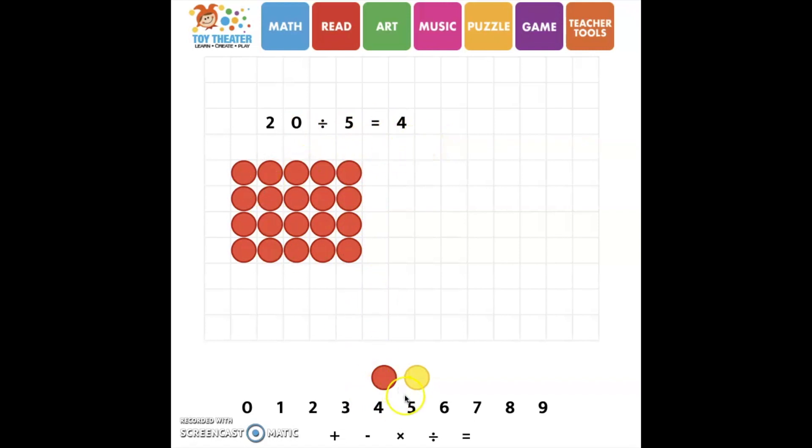We also know that this could be represented with the equation five times four is equal to 20. So you can really see when you make it an array or those equal groups that they're the inverse of each other. The multiplication and division because when I see this, I think, well, five times four is equal to 20. But then if I divide the 20 into those five equal groups, those columns, then I have four rows. So again, if you would rather use this online tool, it's a really great one to have manipulatives online for all of your math work.